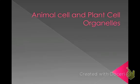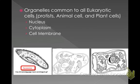We have some things in common with protists and some things that are different with animal and plant cells — they're a little bit more complex. The first three things we're going to talk about are common to all eukaryotic cells: protist cells, animal cells, and plant cells, and you are already familiar with them.